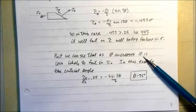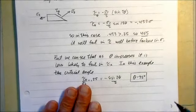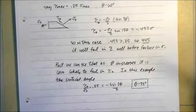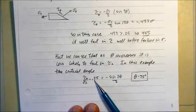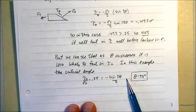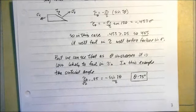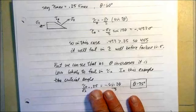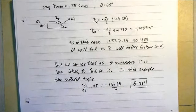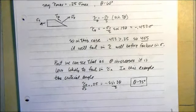As theta increases, it is less likely to fail in shear. In this particular example, where tau-max equals 0.25 of sigma-max, our critical angle is found by solving for theta, giving minus 15 degrees — which is the same as positive 75 degrees. So where shear stress maximum is 0.25 of normal stress max, it would fail at anything less than a 75-degree angle, or an angle between 45 and 75 degrees.